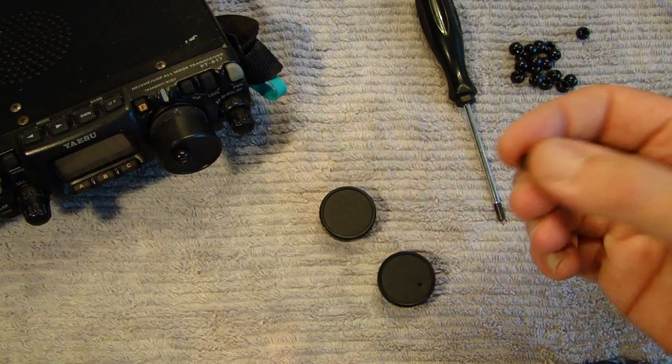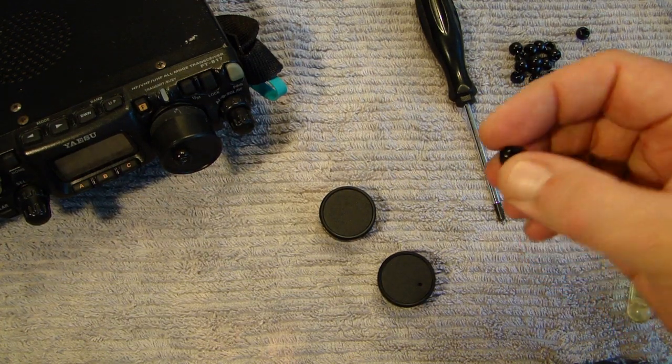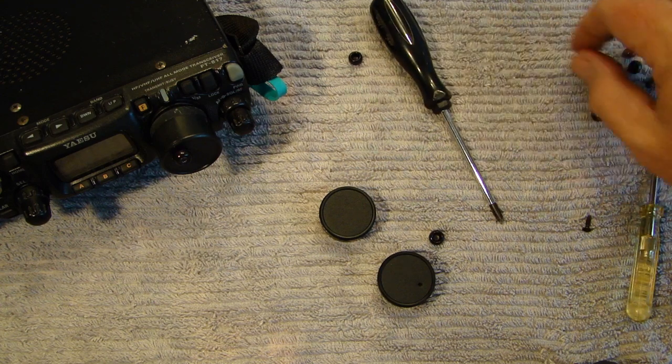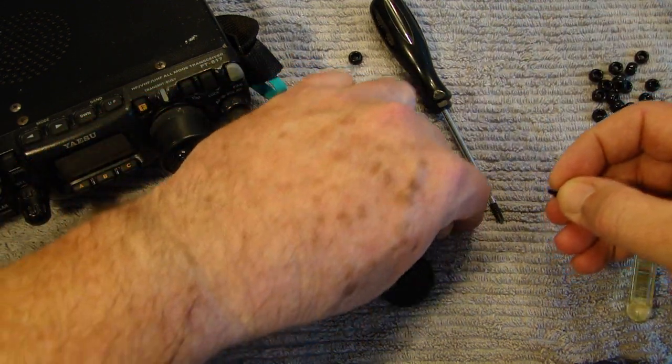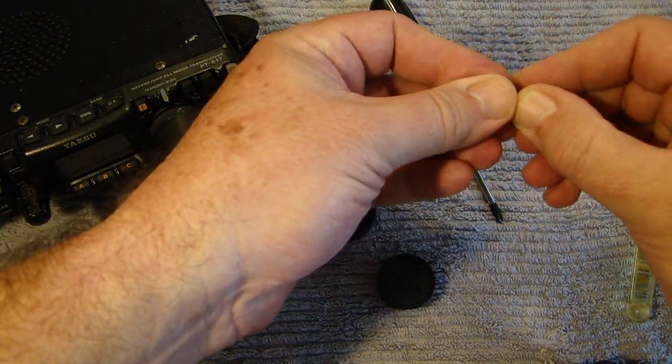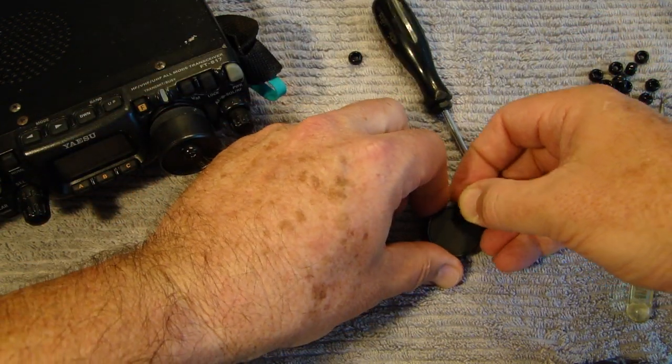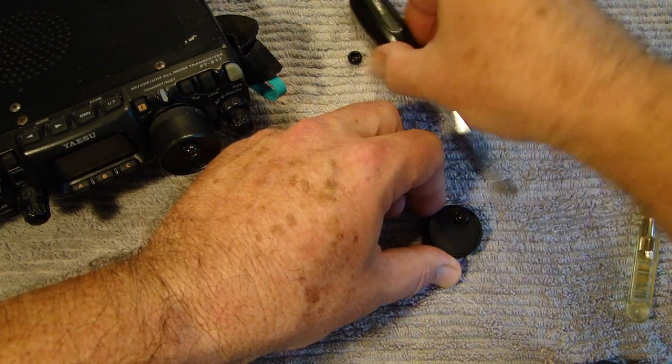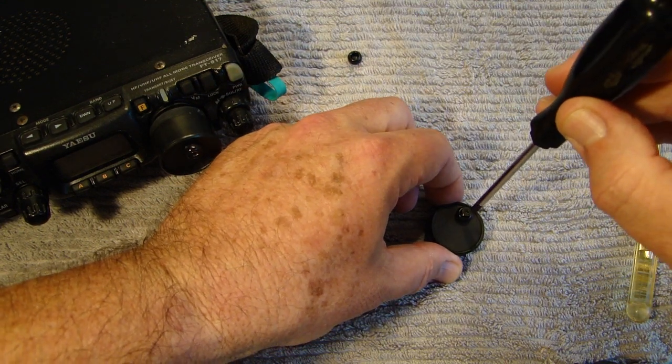Then take one of these rings that are normally used to make collars for women, like this here, that is very easy to find. Take a screw, put the screw in here, and screw it on the cap.